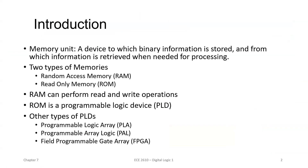So first, what is a memory unit? The memory unit is a device in which binary information is stored and from which information is retrieved when needed for processing. It is a unit of collection of storage cells with associated circuits, and it stores data in the form of zeros and ones. A word represents information stored in a memory location, and each word is represented by an address. A group of eight bits comprises a byte.